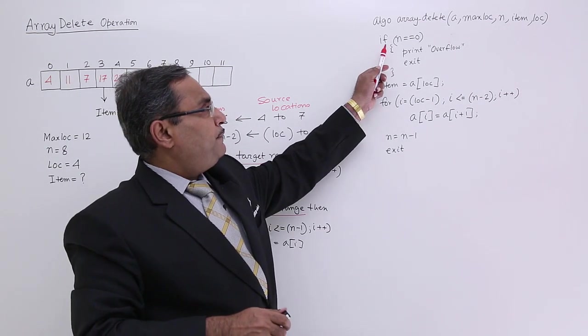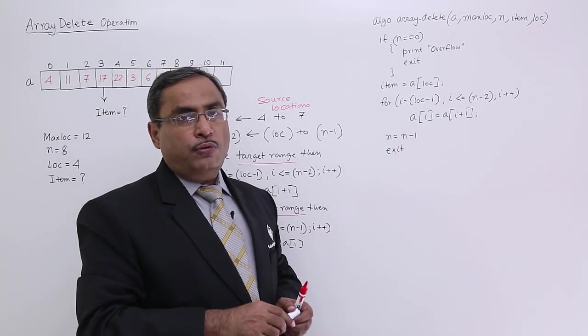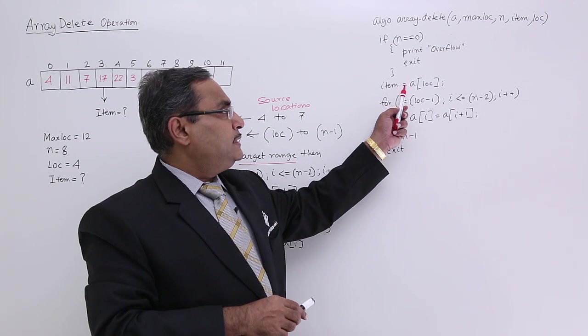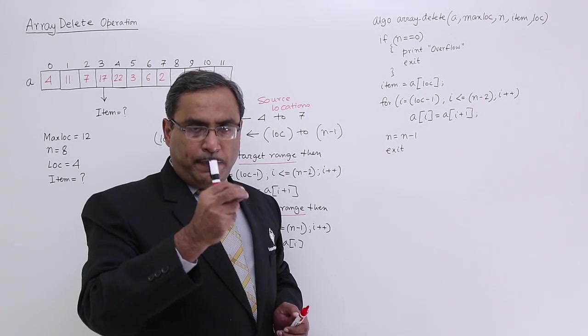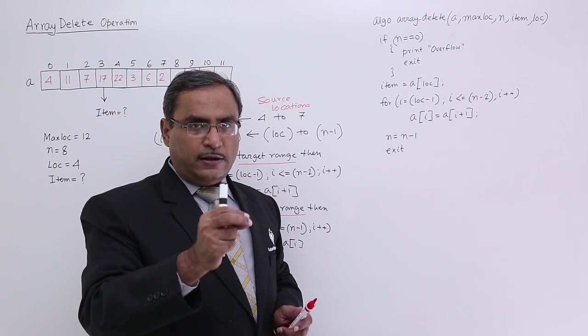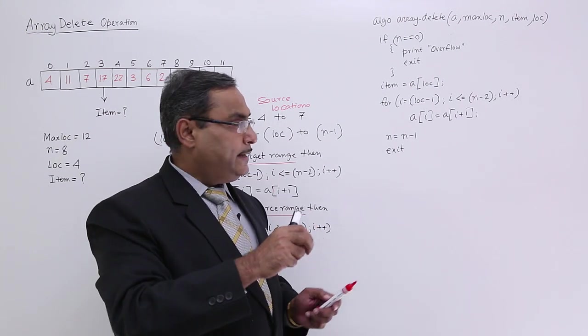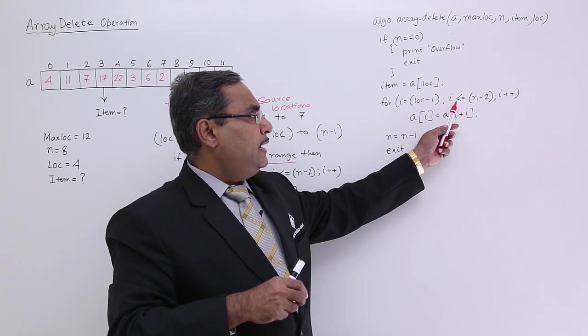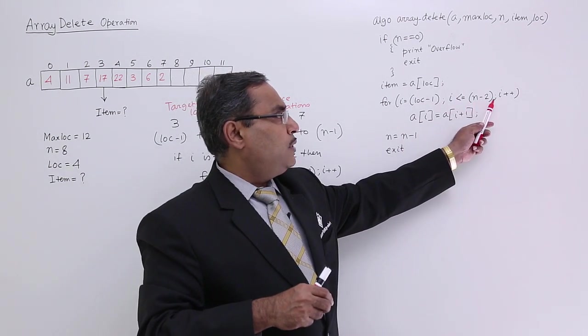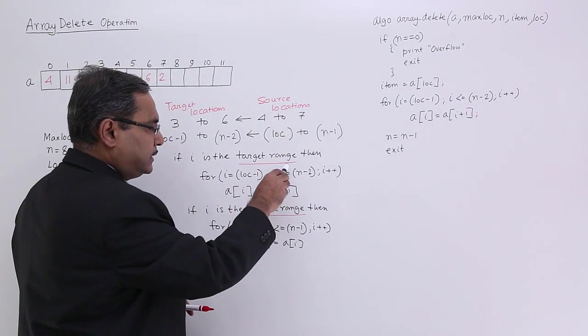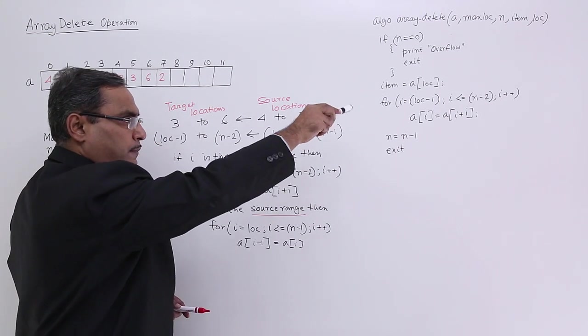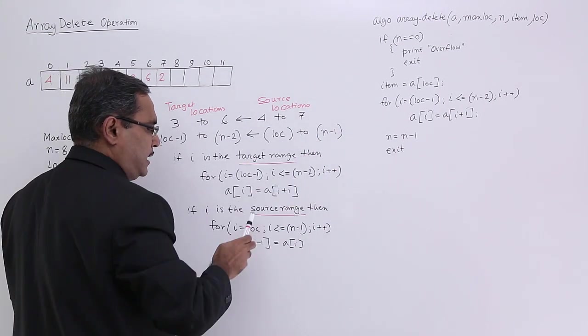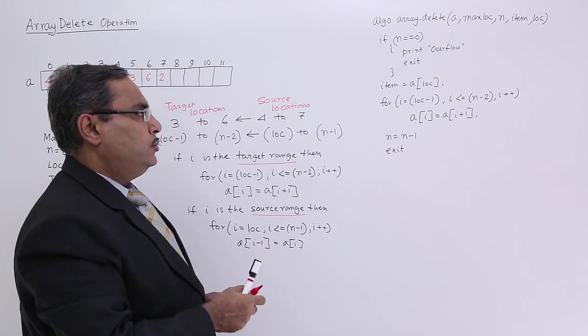Now see, if n is equal to 0, print underflow and exit. Item is equal to a lock. So I am just keeping that replica of that data at location of a lock onto item. If i is equal to lock minus 1, i less than equal to n minus 2, i plus plus. So I have written the same which I discussed earlier. I could have written the same also. In place of writing these two lines, I could have written these two lines also.